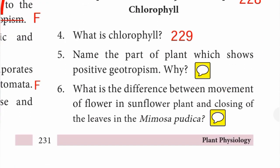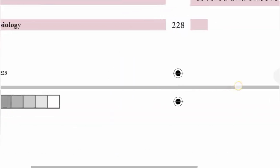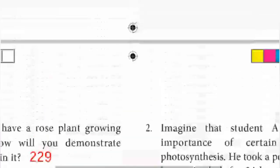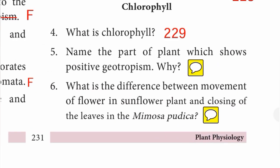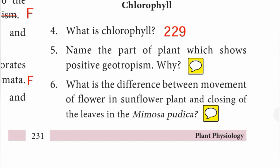Fourth one: what is chlorophyll? From page 229: chlorophyll is the green pigment in leaves. Question number five: name the part of the plant which shows positive geotropism and why. Answer: root shows positive geotropism because of the unidirectional movement in response to gravity. Question number six: what is the difference between movement of flower in sunflower plant and closing of leaves in Mimosa pudica?